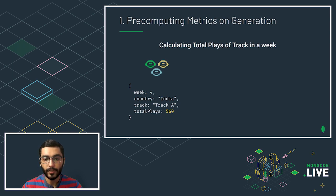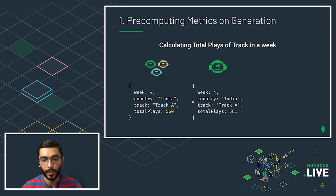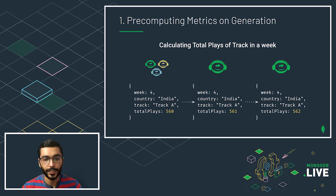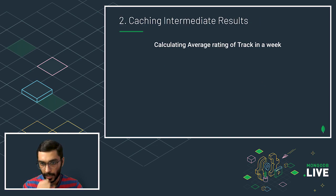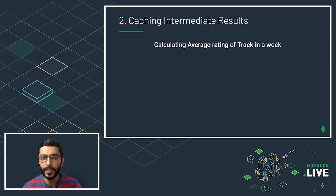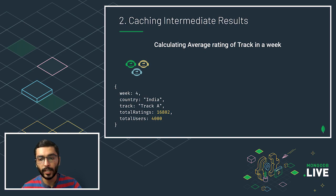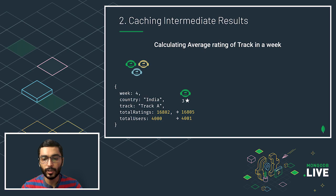Whenever a user event comes in, we just update that pre-computed document, so no computation is needed at the time the result is requested. The second technique handles cases where we can't calculate the exact answer beforehand. For example, to find the average rating of each track in a week, instead of recalculating the average on every new rating, we keep the intermediate bits and pieces — total rating and total users — and update those independently as events arrive.